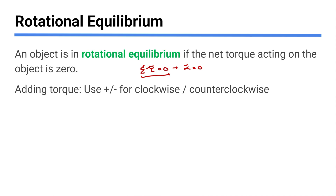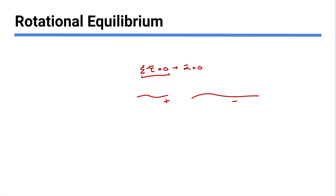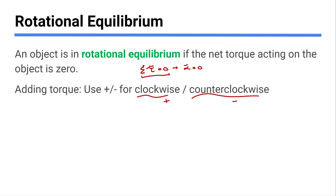When we do a net torque, just like with net force, we want one direction to be positive and one to be negative so we can add and subtract to see if we get zero. Anything that tries to make a clockwise rotation happen, let's call that positive. Anything that tries to make a counterclockwise rotation happen, let's call that negative. If your brain works the opposite way and you want counterclockwise positive and clockwise negative, that works too — we just want a convention.